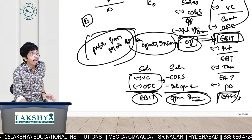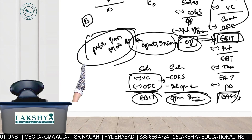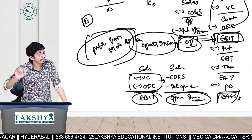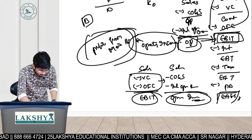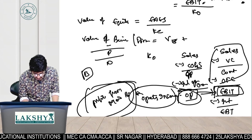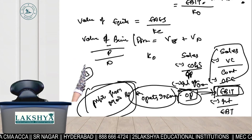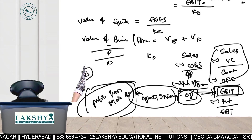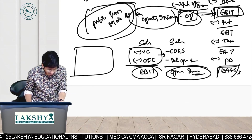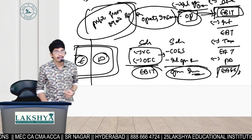So we have two formulas: Value of a firm = EBIT / Ko; and Value of equity = Earnings available to equity shareholders / Ke. There is also a third formula: Value of firm = Value of equity plus value of debt. Since in capital structure theories there are no preference shares, the firm's total value from all investors equals equity plus debt.